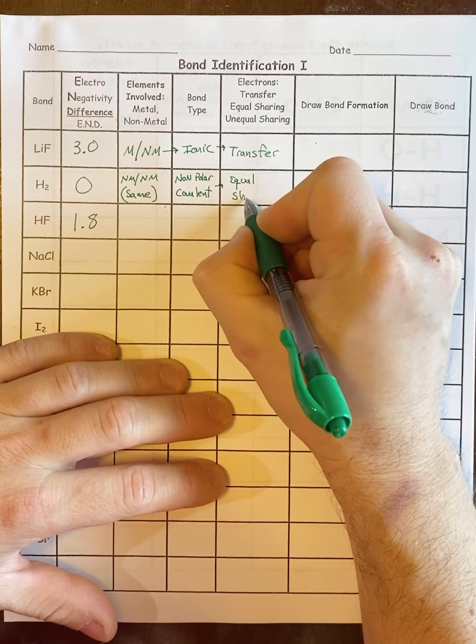And now to show that the sharing is unequal, I put the arrow in. And the reason it points towards the F is the electronegativity of F is 4.0, and the electronegativity of H is 2.2. So you don't need this part in the answer. I'm just showing you why it's pointing towards F and not towards H.